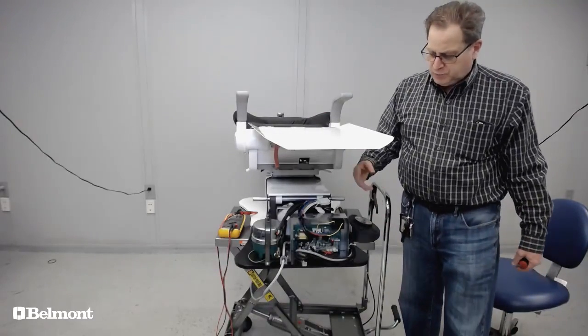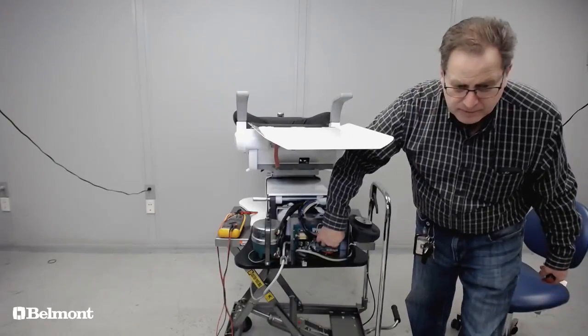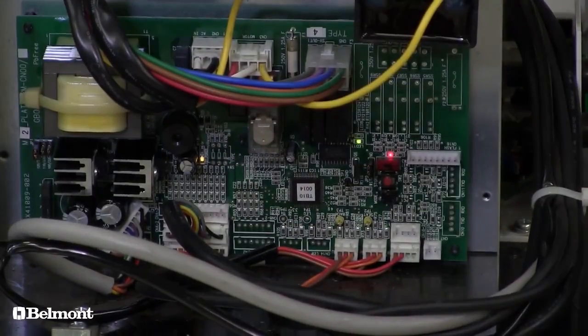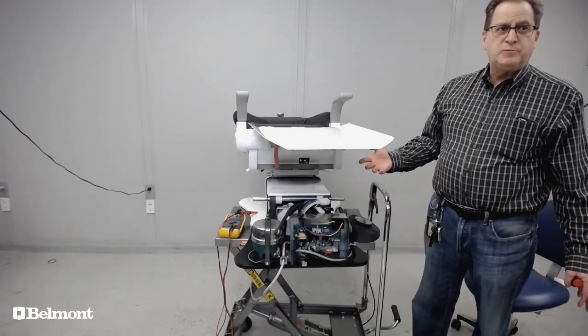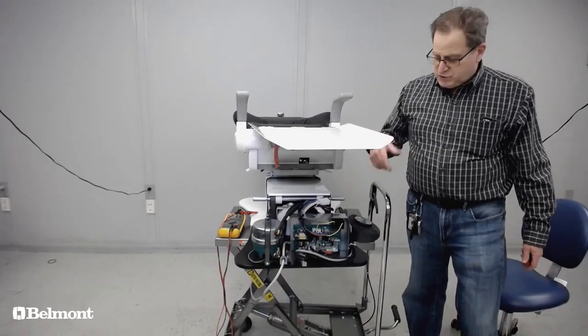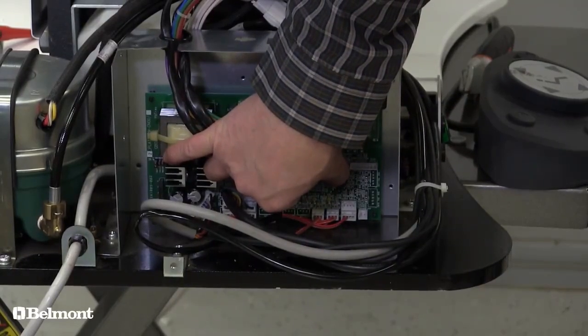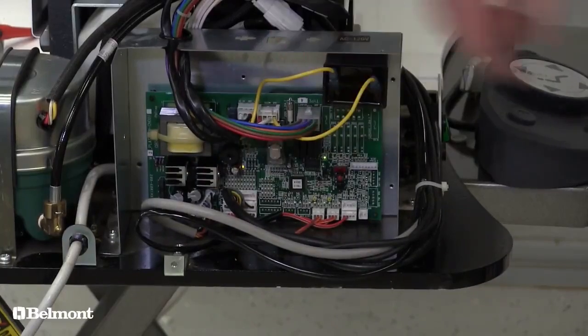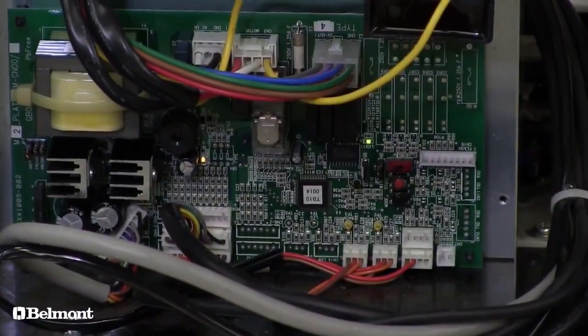We would program it by simply pushing the store button, which is the red button, and then the backrest recline switch. And now we have programmed all four. We would simply go back to the box and take the slide switch and turn it off. If you notice, the red LED went off and the beeping has stopped. So now all your limits have been set.